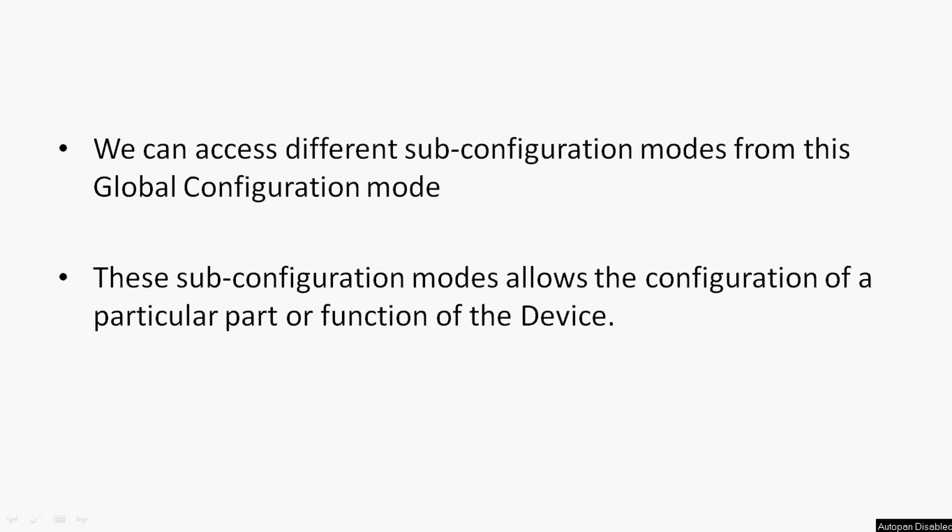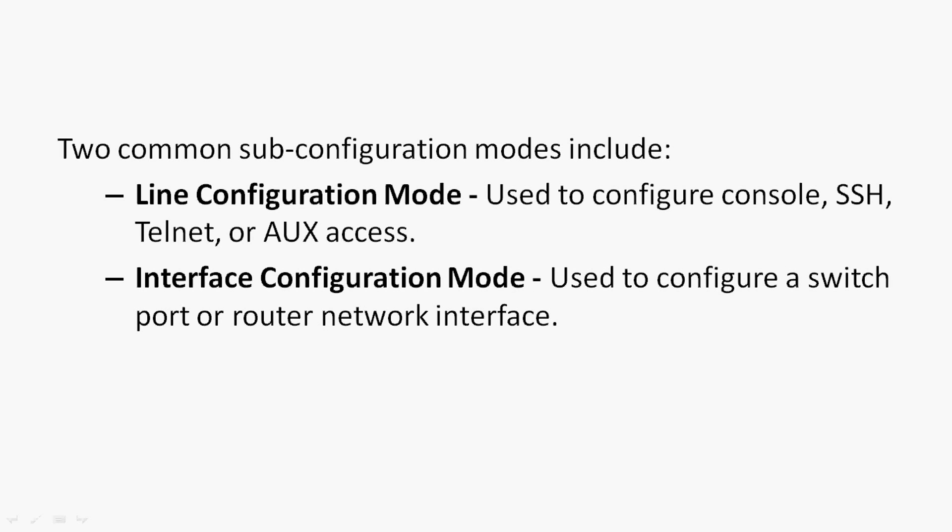We can access different sub-configuration modes from global configuration mode. Sub-configuration modes allow the configuration of a particular part or function of the device. Two common sub-configuration modes are line configuration mode — used to configure console, SSH, Telnet, or AUX access — and interface configuration mode, used to configure a switch port or router network interface.